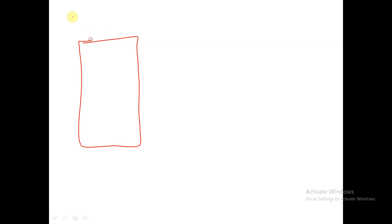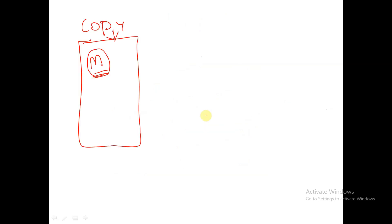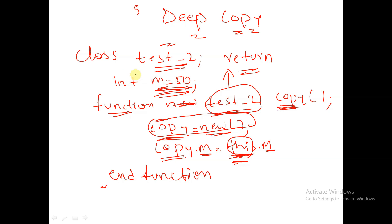The handle will be pointing to an object, and a property will be present there. With the keyword 'this', which refers to the global variable inside the class, this.m refers to the property m inside the class. So the value 50 will be stored inside this copy object. Like this we are copying the global variable into an object.